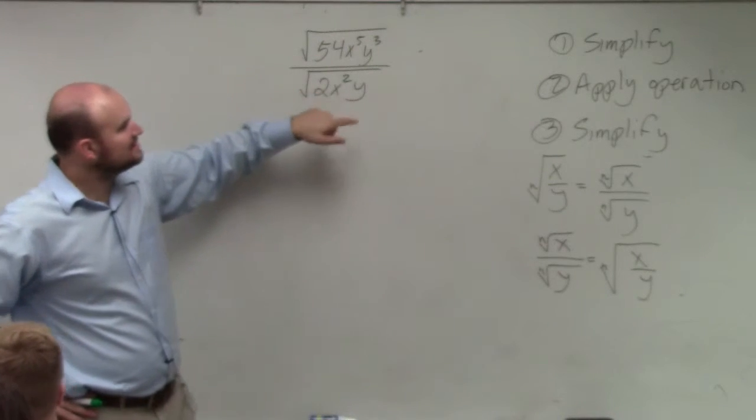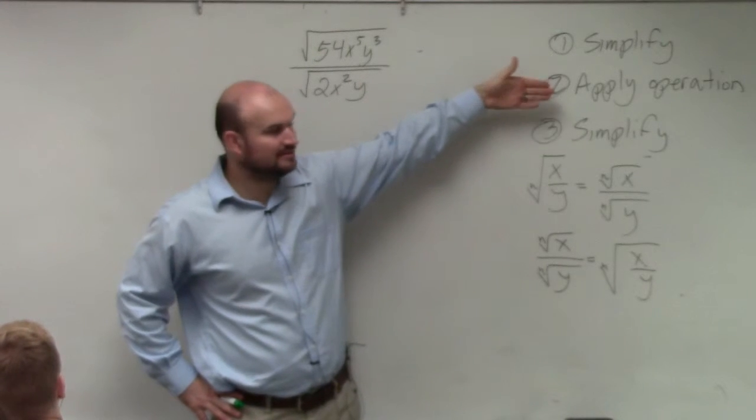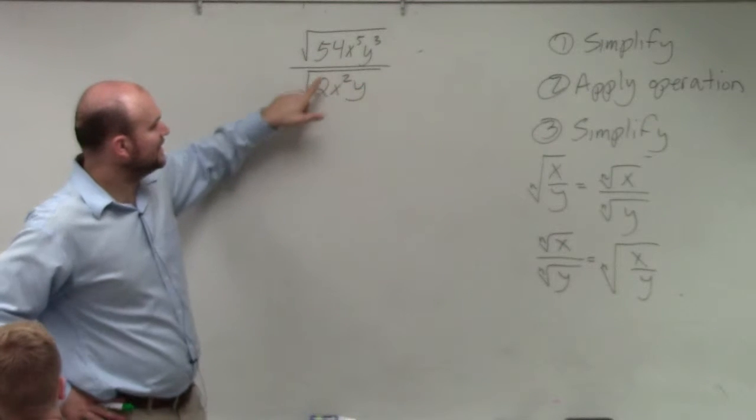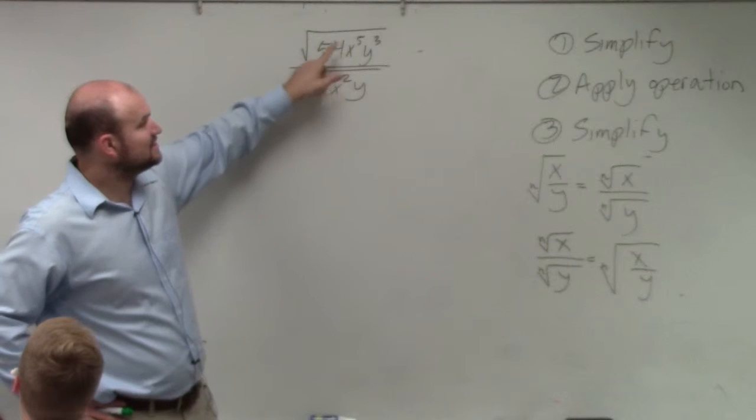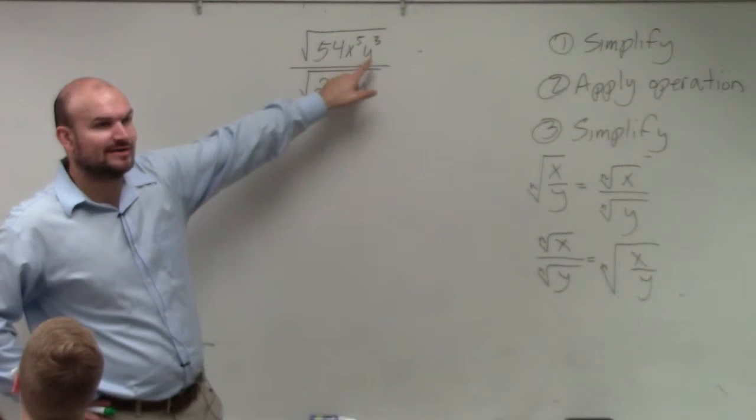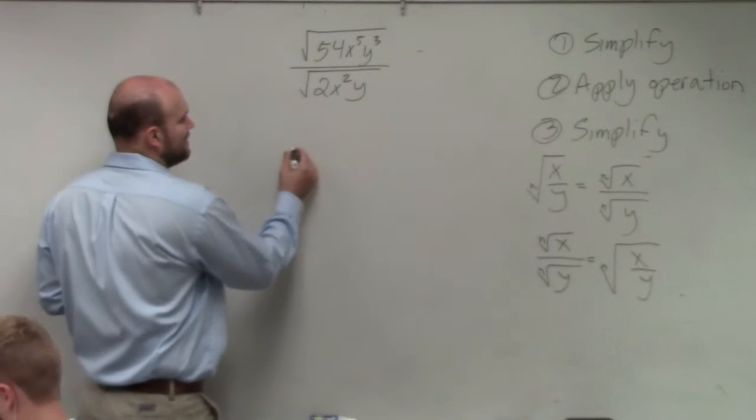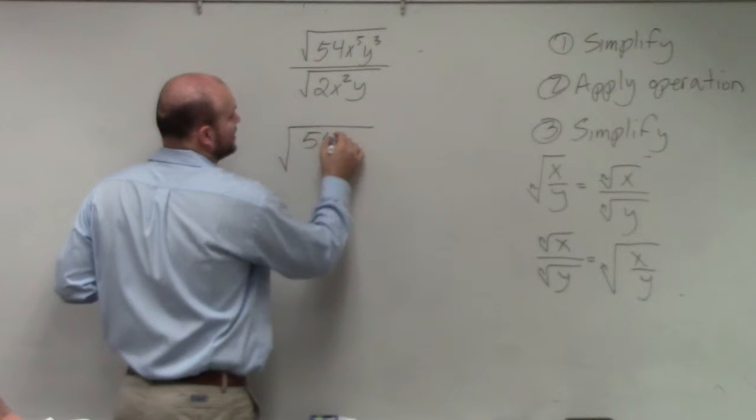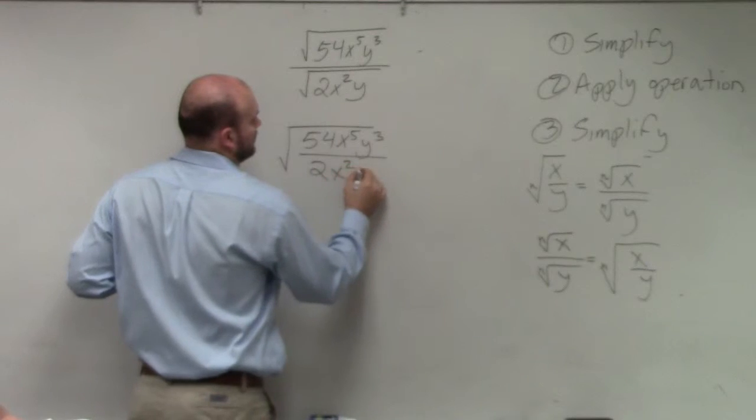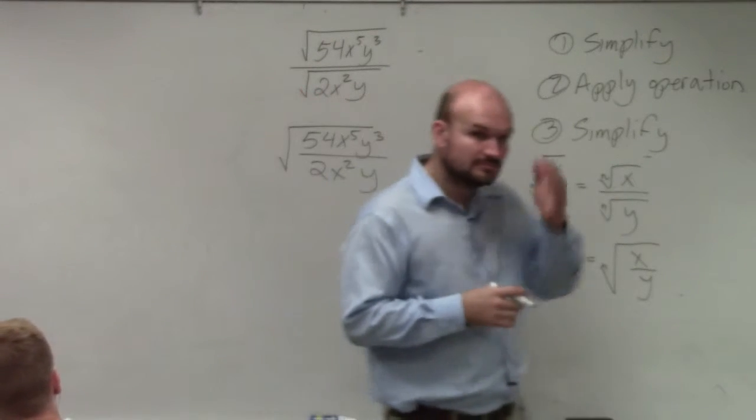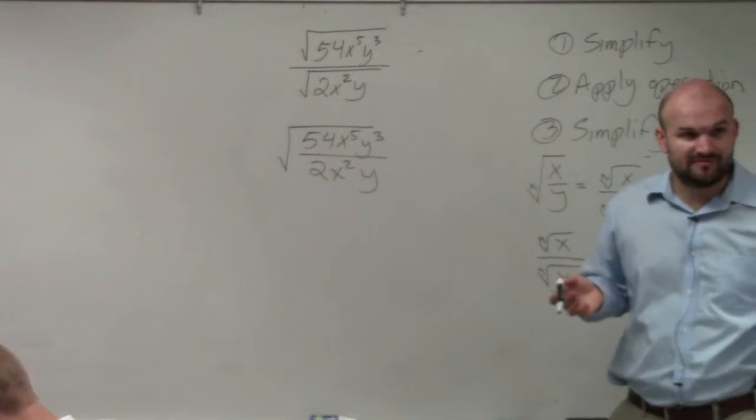Now, one thing I noticed is in this problem, the steps are the same. Simplify, apply operation, simplify. What I notice in here, do you guys think 2 divides into 54? Yeah, they're both even, right? Would x squared divide into x to the fifth? Yes. And would y divide into y cubed? Yes. So in this problem, I'm going to simplify them. And by simplifying, what I'm going to do is I am going to put them under the same radical symbol. So therefore, by putting them under the same radical, now I can basically simplify them.